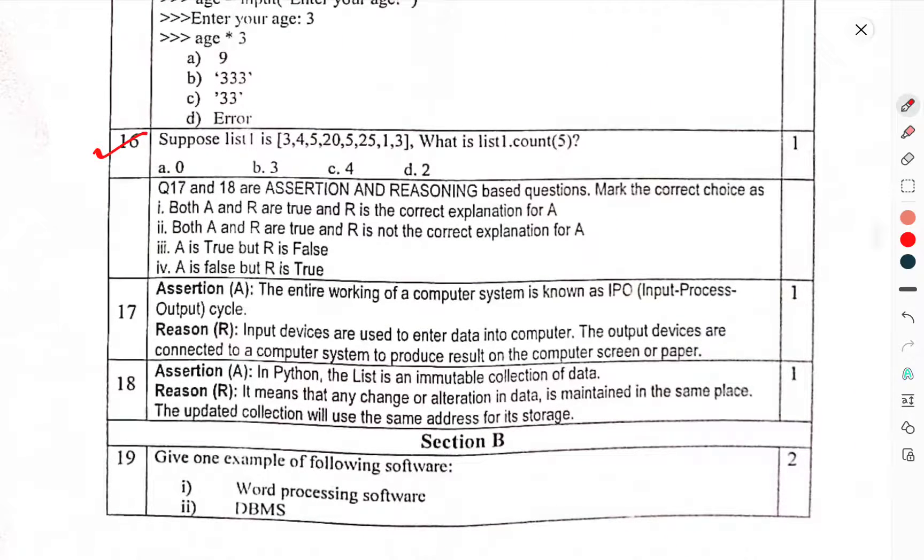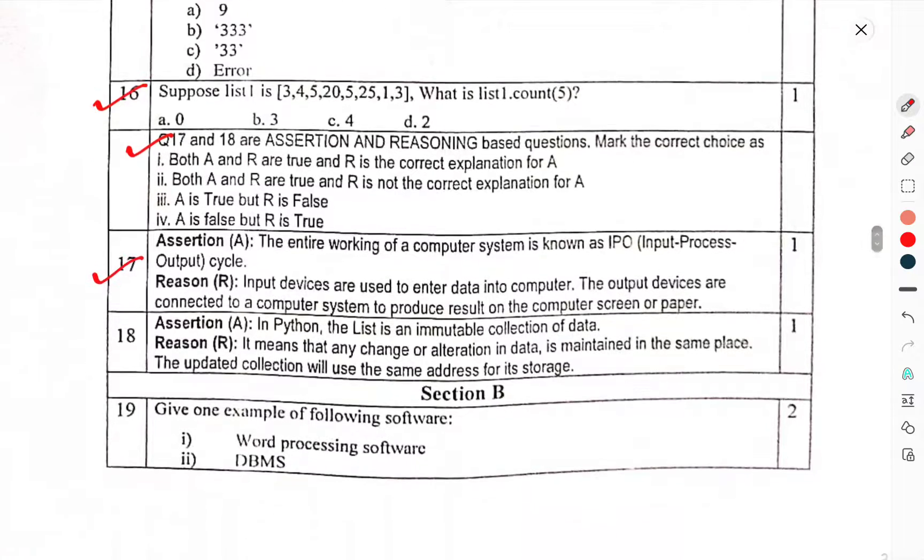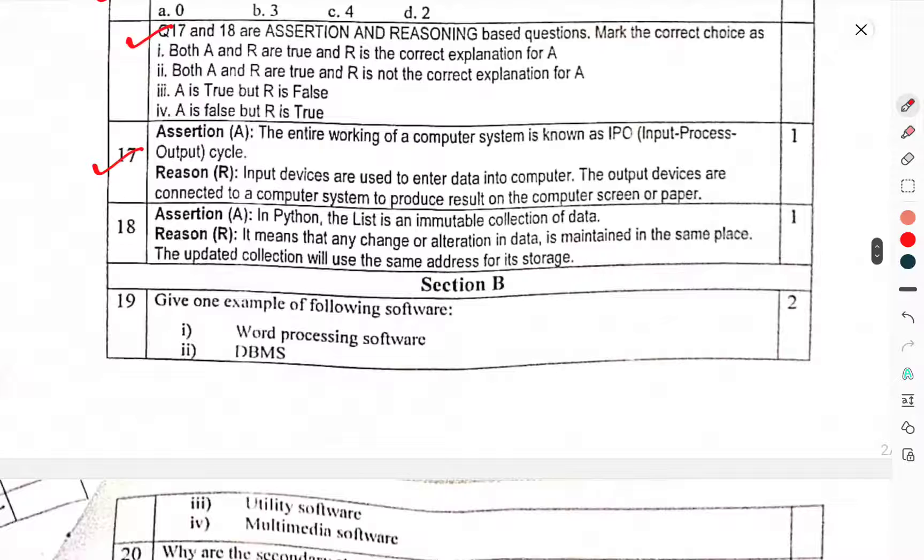Question 16: Suppose List 1 is 3, 4, 5, 20, 5, 15, 1, 3. What is list 1 count 5? Question 17: As a region. Question 18: In Python, a list is an immutable collection of data. It means that the change or alteration is maintained in the same place. The updated collection will use the same address for its storage.